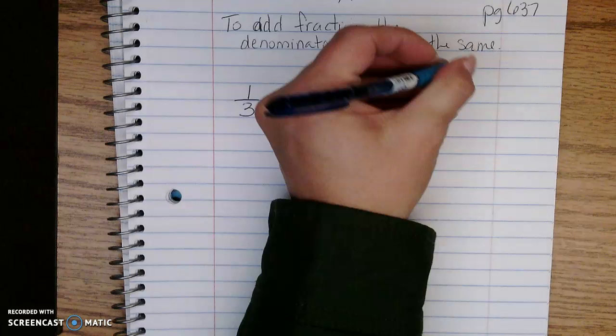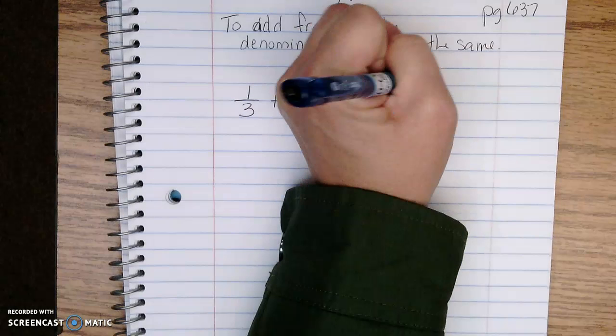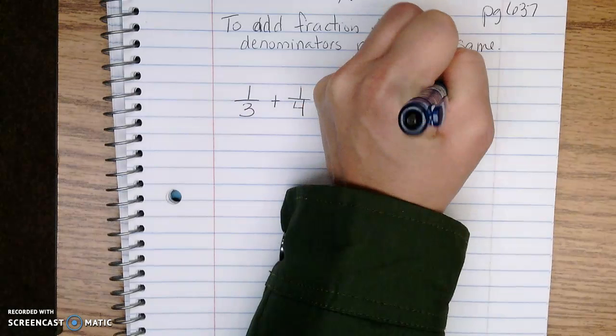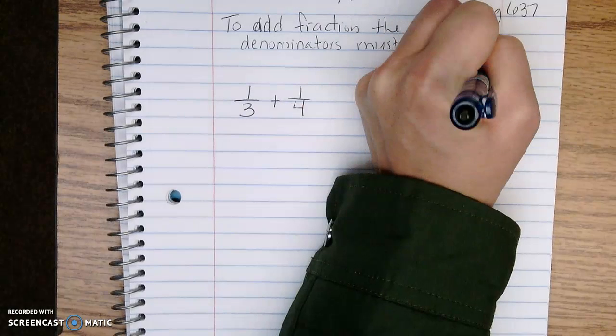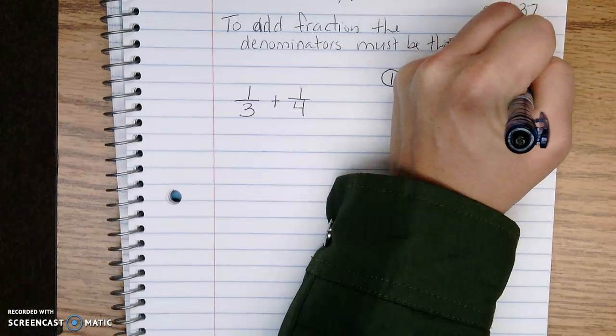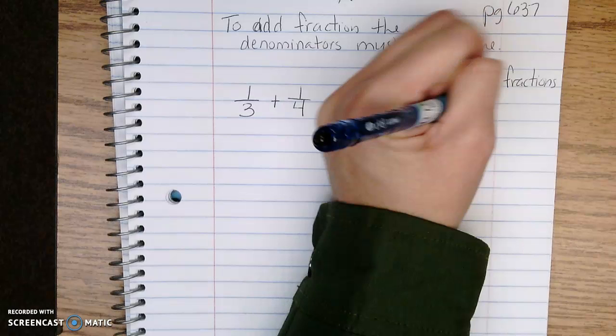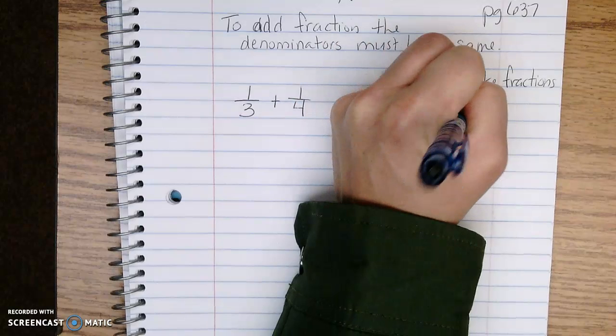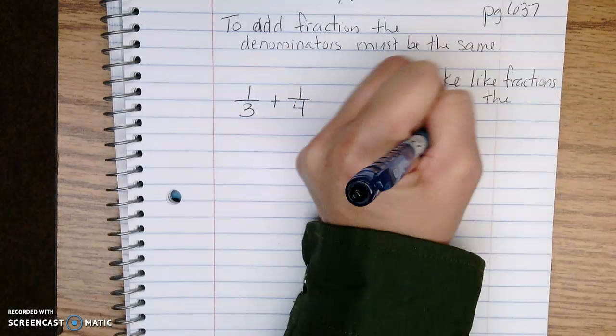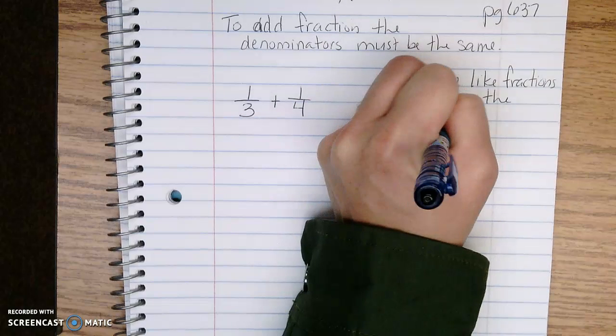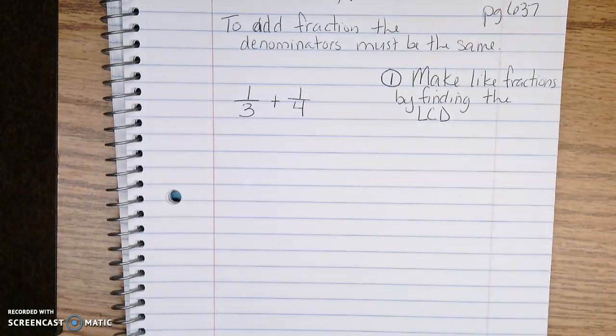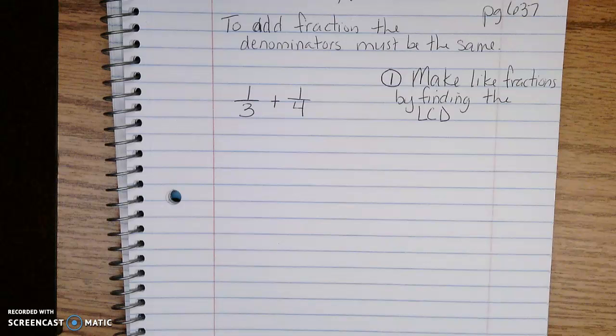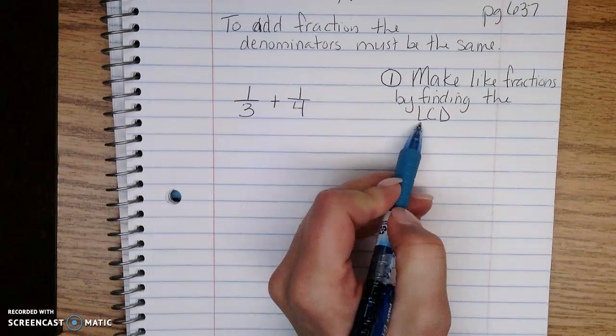Step one: make like fractions by finding the LCD. The official rule for adding fractions is to find the least common denominator.